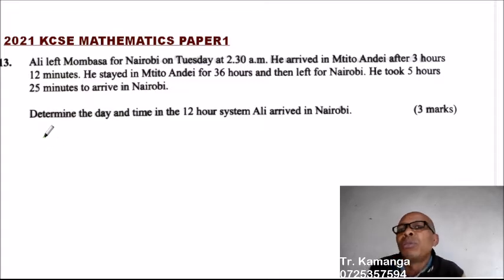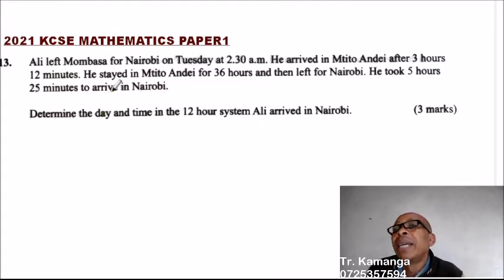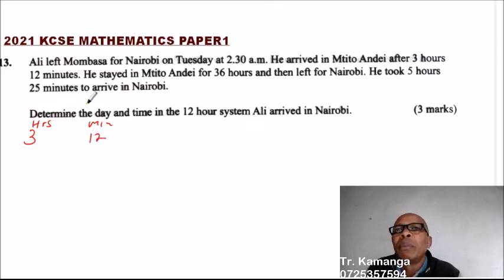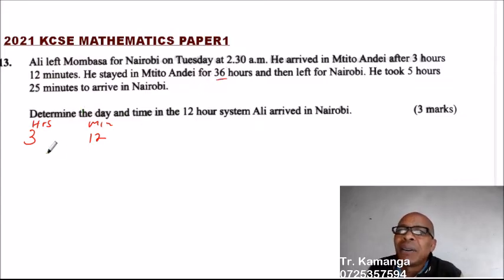What you need to do here is find the total number of hours Ari spent on the journey from Mombasa to Nairobi. It took 3 hours 12 minutes from Mombasa to Mutito Andei. He stayed there for 36 hours.